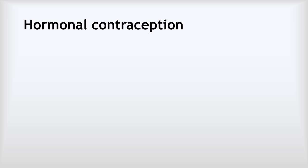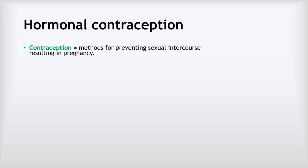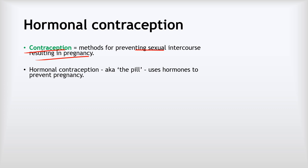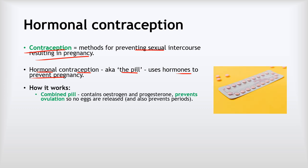Now we're going to look at hormonal contraception. Contraception in general is methods for preventing sexual intercourse from resulting in a pregnancy. There are two types: hormonal and barrier contraception. Hormonal contraception, also known as the pill, uses hormones to prevent pregnancy. There are broadly three main types. The first is the combined pill — a pill containing both oestrogen and progesterone — which prevents ovulation so that no eggs are released, and can also prevent periods, which many women find valuable.